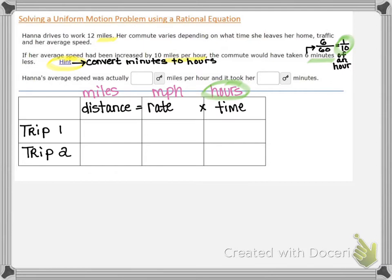So no matter what speed she travels at or how long it takes her, her distance is still 12 miles. That distance doesn't change. So the distance between her house and work never changes regardless of how fast she drives or how long it takes her. It's still 12 miles.